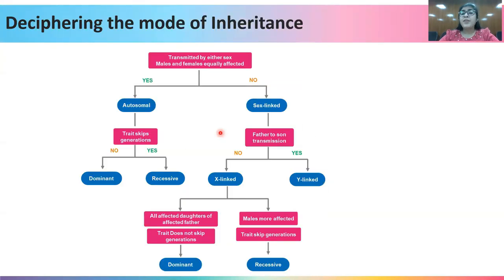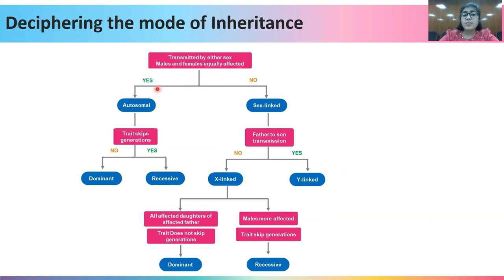The power of evidence and logic is what makes the study of genetics a lot more interesting. If you observe a pedigree in which the trait is transmitted by either sex and both males and females are equally affected, then it is most likely an autosomal trait. If the trait seems to skip generations, then it is an autosomal recessive trait; otherwise it is an autosomal dominant trait.